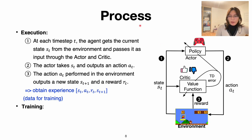Next, let's see the process of actor-critic. It includes two parts: execution and training. In execution, at each time step the agent observes the environment to gather states. The states go to the policy network, which is the actor network. Then it makes actions, changes the environment, and gets the reward. During this interaction with the environment, the agent collects experience: state, action, reward, and next state. This data will be used for training.